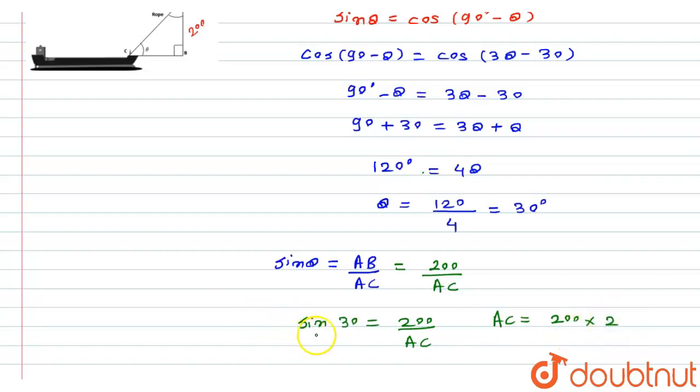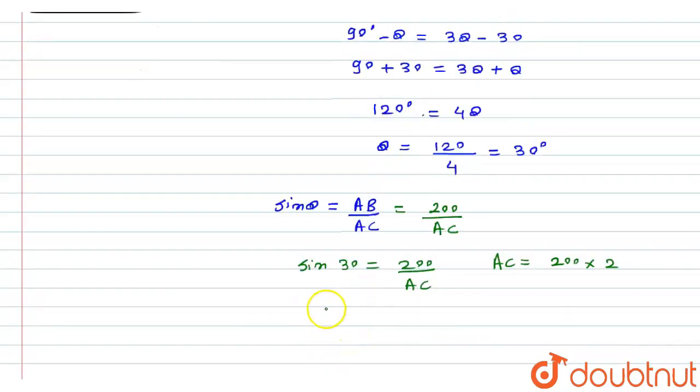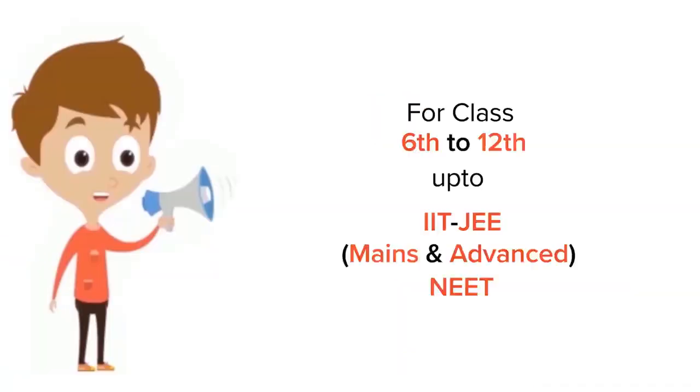From here, I will get AC = 200 × 2, because the value of sin 30° is 1/2. So AC = 200 × 2 = 400 meters. Here is the solution for this particular question. I hope you liked this solution. Thank you.